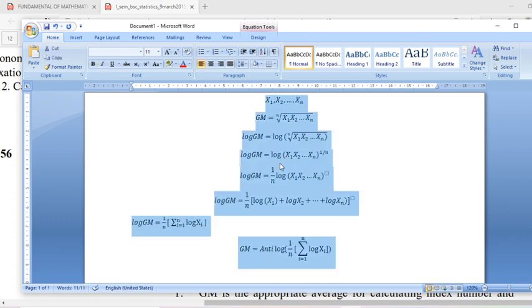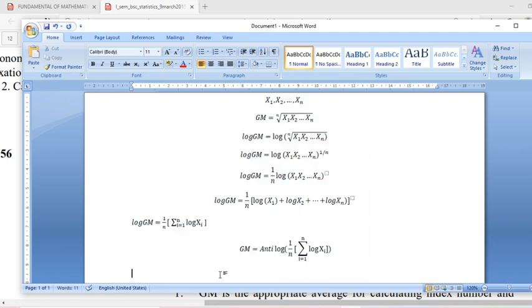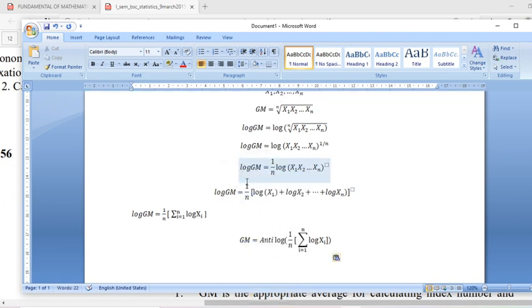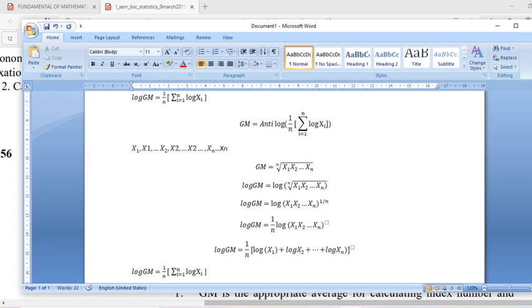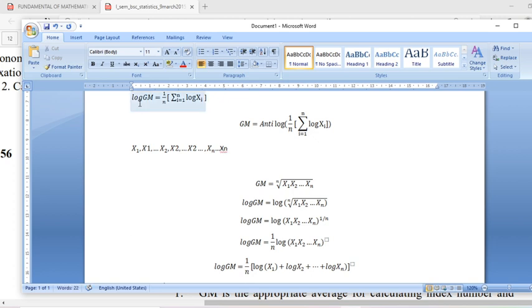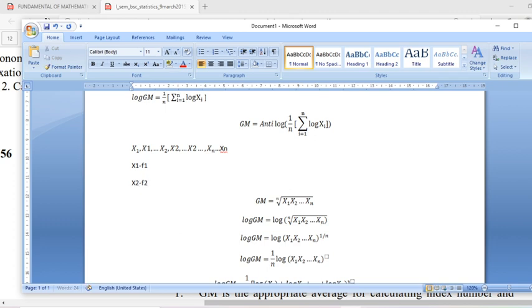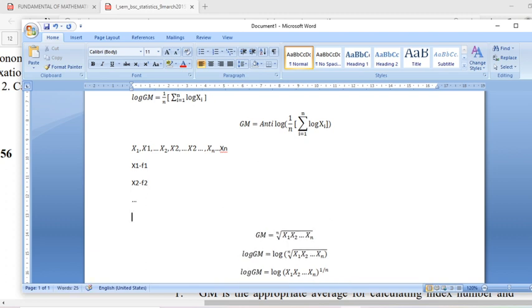Suppose x1 is repeated again and again f1 times, then x2 repeated some f2 times, and so on, xn repeated fn times. So what will be the geometric mean?